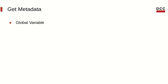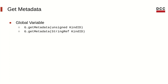Similarly, other components provide such methods — for example, global variables. Functions also have a method to get their attached metadata. All of these methods return metadata nodes.